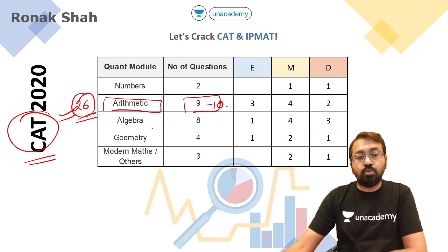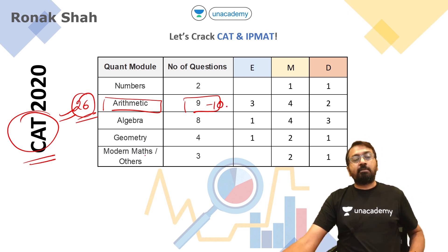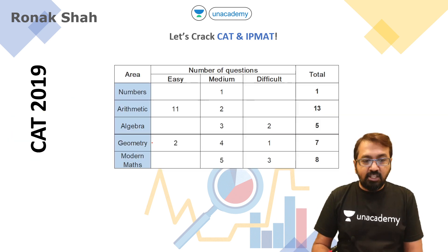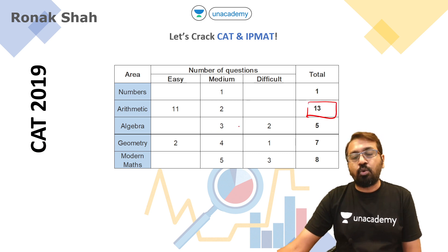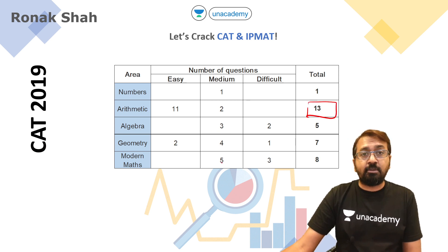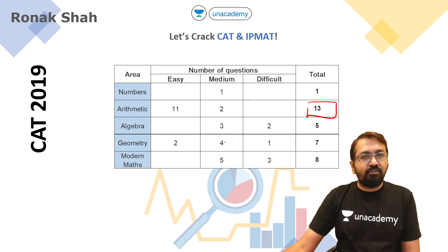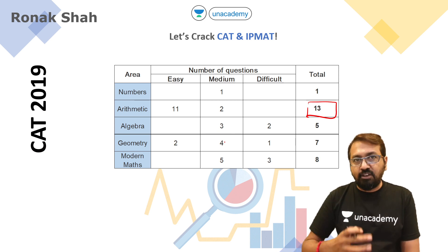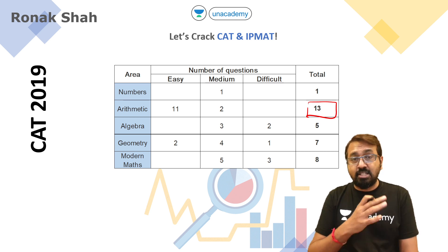In the 2020 CAT, when there were 26 questions, about 9 to 10 of them were from the arithmetic area. Similarly, in the previous year, out of 34 questions, around 13 questions were from arithmetic. That is why we really need to work on this particular module.